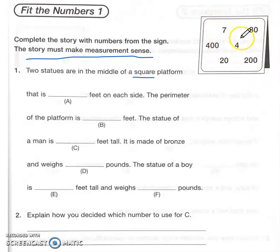200 and 400 is close but that's double, that's not four times the size. How about the other two, 20 and 80? 20 times four, oh that's 80! Look at that. So the two statues in the middle of a square platform, that means they are 20 feet on each side, that's a zero in case you can't tell. And so then the perimeter would be 20 times 4 which is 80. I'm going to cross these out so that I don't get tempted to use them again.